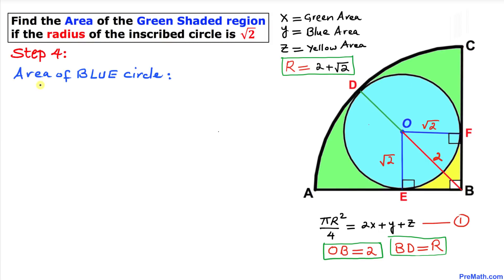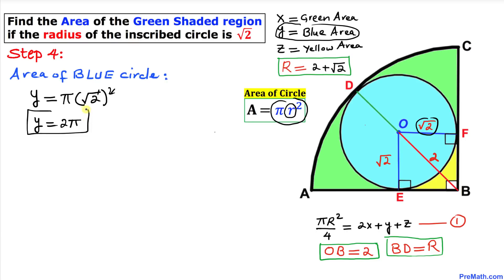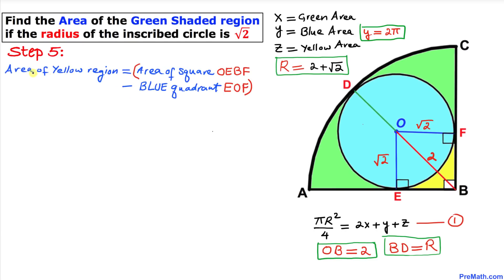In this step, let's find the area of the blue circle, represented by y. The area formula is π r², where lowercase r = √2. So y = π × (√2)² = π × 2, therefore y = 2π.